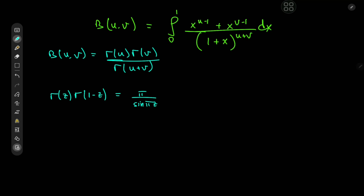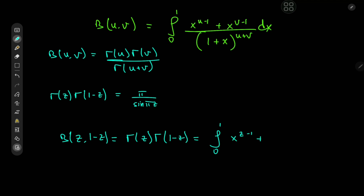With these values, u plus v is going to equal 1, which is quite convenient. So we have beta(z, 1 minus z) equal to gamma(z) times gamma(1 minus z) equal to the integral from 0 to 1 of x to the z minus 1 plus x to the 1 minus z minus 1 — so we have x to the negative z — divided by 1 plus x dx. And this of course should equal pi divided by the sine of pi times z.